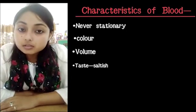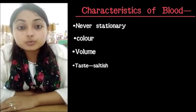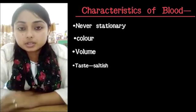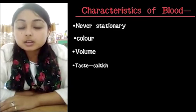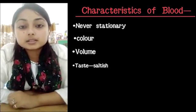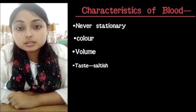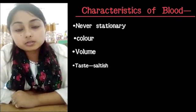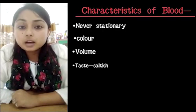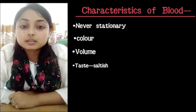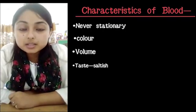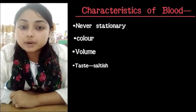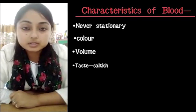Blood is also dark red in color — which type? The deoxygenated blood, the opposite of oxygenated blood. Deoxygenated blood is that type of blood which contains comparatively less amount of oxygen. Our blood also tastes slightly saltish due to the sodium ions present in us.